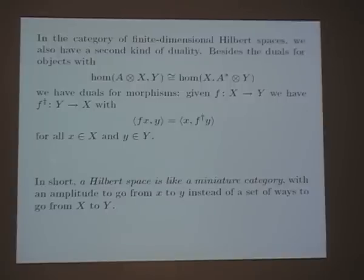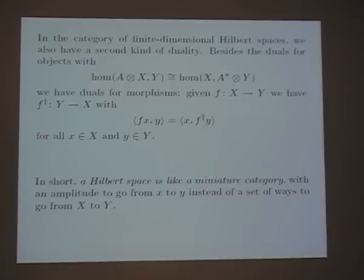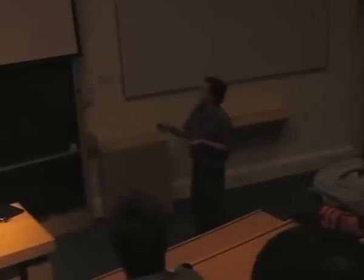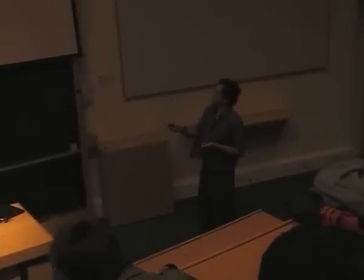The equation for the dagger looks suspiciously similar to the isomorphism for the hom, with the inner product being somehow analogous to the hom. What's really happening is that a Hilbert space is like a miniature category — not a category, just a set — but with some of the same structure. A category has a set of ways to go from one object to another; a Hilbert space has a complex number (an amplitude) for going from one state to another. That's the basis for the phrase 'adjoint operators' — the same concept as adjoint functors.